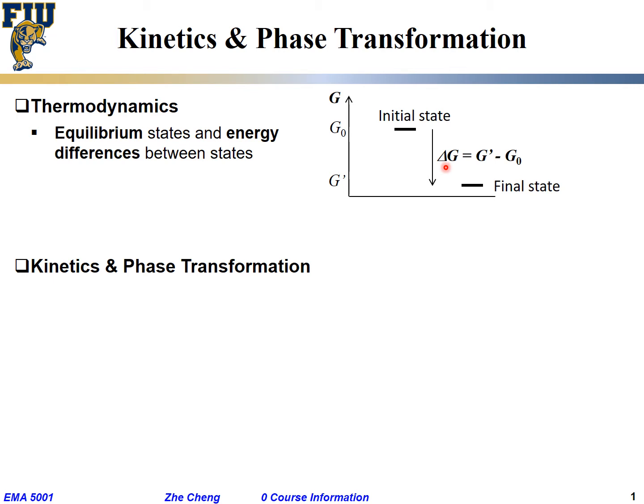Make sense? The delta G would be the final state minus initial state, G prime minus G0. And from what you learn in thermodynamics, if delta G is negative, the process from initial to final is what people call spontaneous. It will go that way. So thermodynamics tells us the equilibrium, the energy, energy difference. It also is concerned with the possibility or direction of transformation between states.